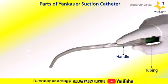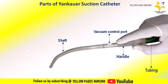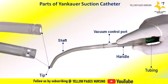The handle is connected to flexible tubing that extends to the suction source, allowing passage of suction materials to the suction machine. The shaft is a straight rigid tube extending from the handle, usually made of clear transparent plastic for easy visualization of suction material, and is long enough to reach the oropharynx comfortably. The tip is open-ended with multiple side holes; some Yankauer catheters have a round tip while others have a bulbous tip, which reduces the risk of tissue trauma.